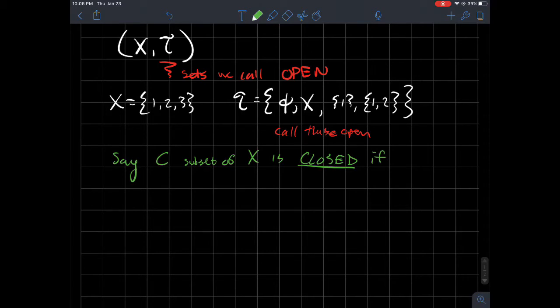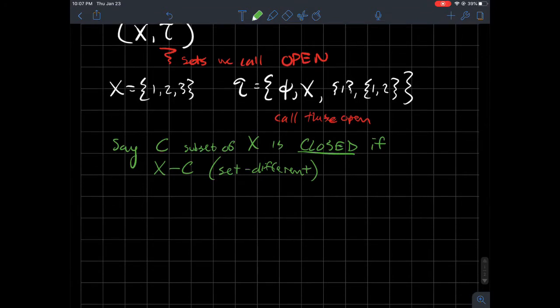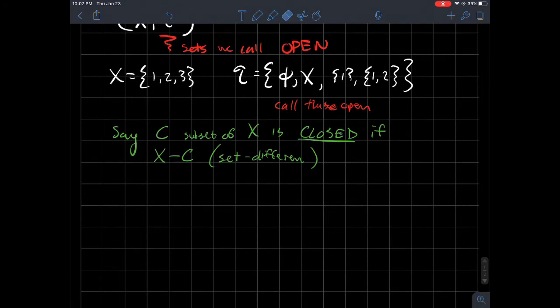So the way that we're going to write complement is X minus C. And so this notation is called set difference. If you've taken a statistics class, even just an undergrad kind of regular basic statistics class, there's a good chance you talked about events. And the complement of an event, remember is like, what's the stuff that can't happen? What's the stuff that falls out of your event?